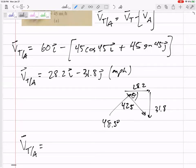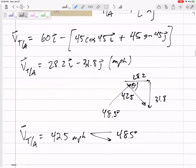So here we go. VT slash A is 42.5 miles per hour at, and let me, you see how I'm specifying with that arrow that it's below horizontal, 48.5 degrees.